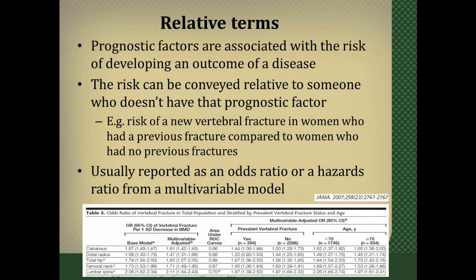This is an example from a paper published in JAMA that looked at the rate of vertebral fractures in women with osteoporosis based on whether they had a prevalent or background vertebral fracture before the study started. Age is a prognostic factor here, and the cohort was broken into women under 70 and women over 70. The odds ratios are reported based on age — this is how a prognostic risk factor's impact on outcomes may be reported as an odds ratio or hazard ratio.